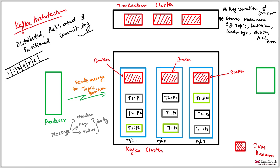The data is replicated — like a newspaper with multiple pages (partitions) spread across machines. The partitions are spread across multiple machines in the cluster. When we say we have a partition, there will be only one leader partition. Out of these three copies, there will be only one leader and the others are followers. This is the leader, and these are followers (F).